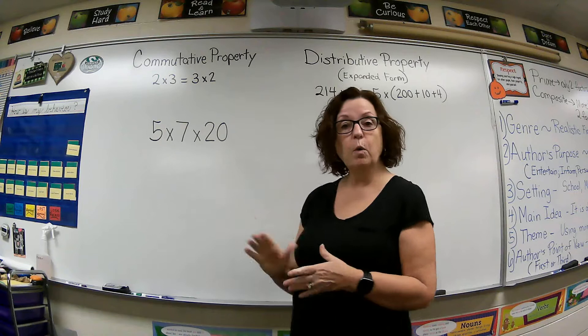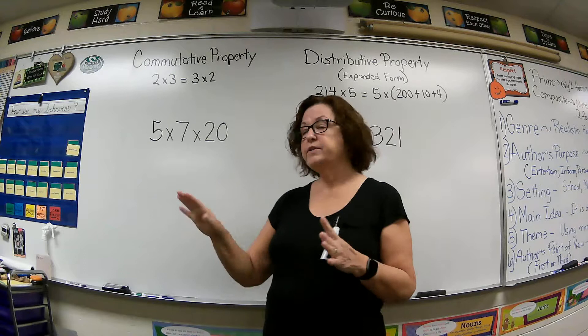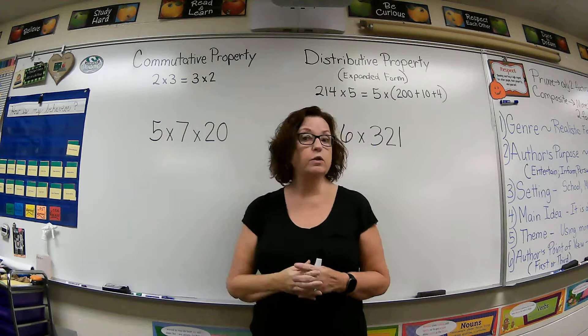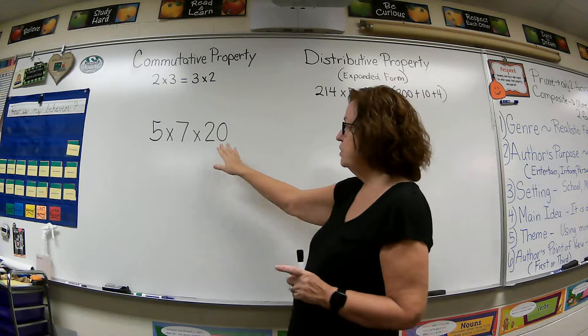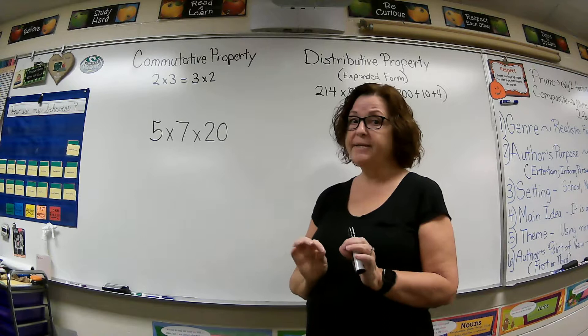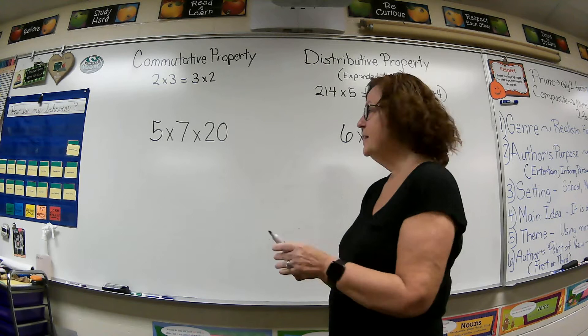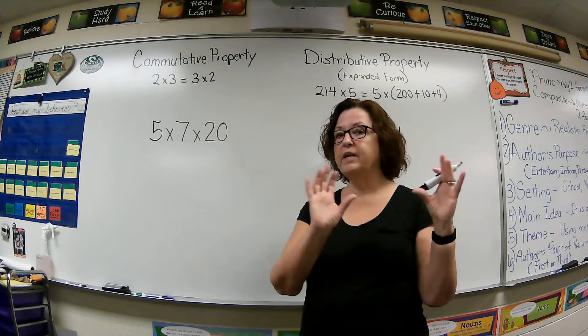We've got 5×7×20. Now can you think of two numbers in this equation that would work together better than doing 5×7 and then that answer times 20? Well, if you think about it, if I use my 20 with one of these numbers first, I can use my basic fact and tack on that zero at the end. Sorry about the announcement - maybe it makes you feel more like you're in school when you get interrupted with announcements.